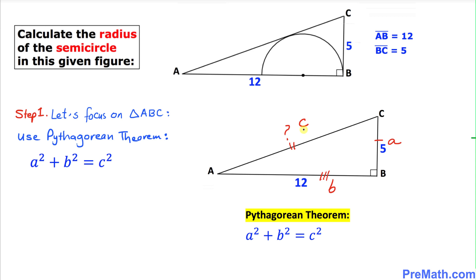Let's fill in the blanks. A² is going to be simply 5², and B² is 12², equal to C². 5² is 25 plus 12² is 144 equal to C², which gives us C² equal to 169.